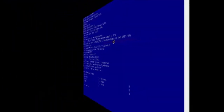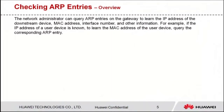Next, let's show you how to query ARP entries. The network administrator can query ARP entries on the gateway to learn the IP address of the downstream device, MAC address, interface number, and other information. For example, if the IP address of a user device is known, you can query the corresponding ARP entry to learn the MAC address of the user device.